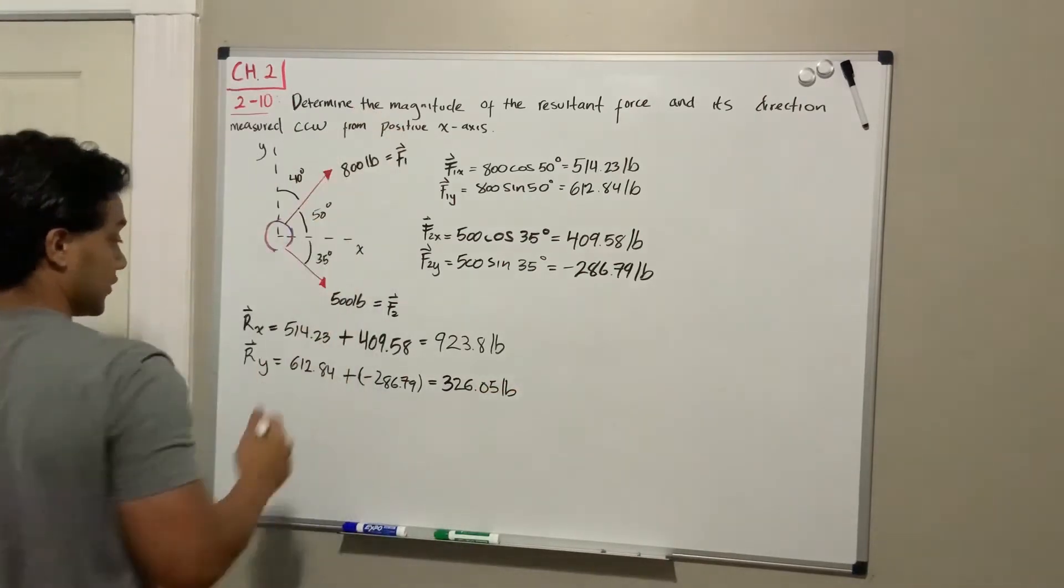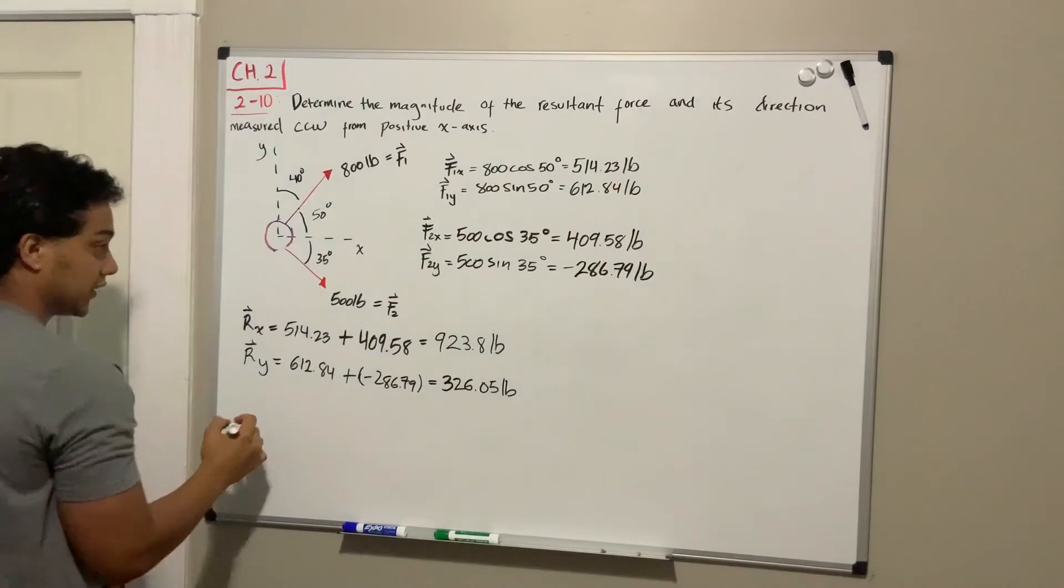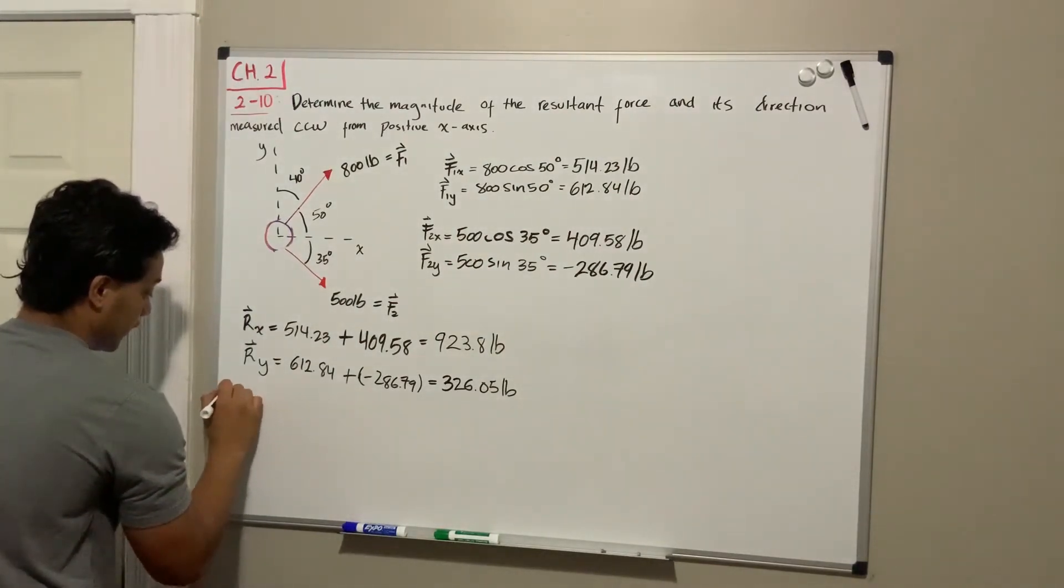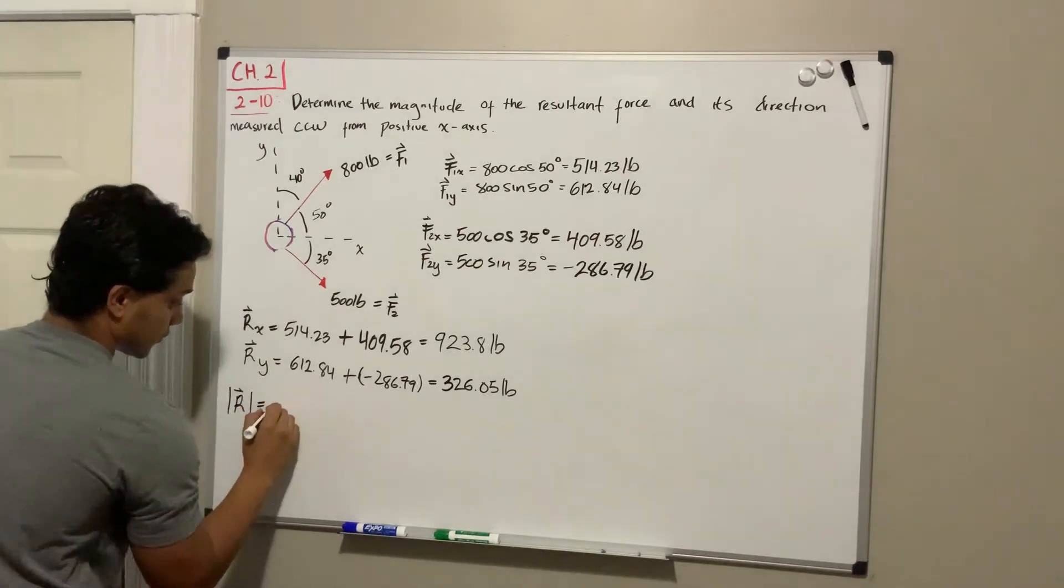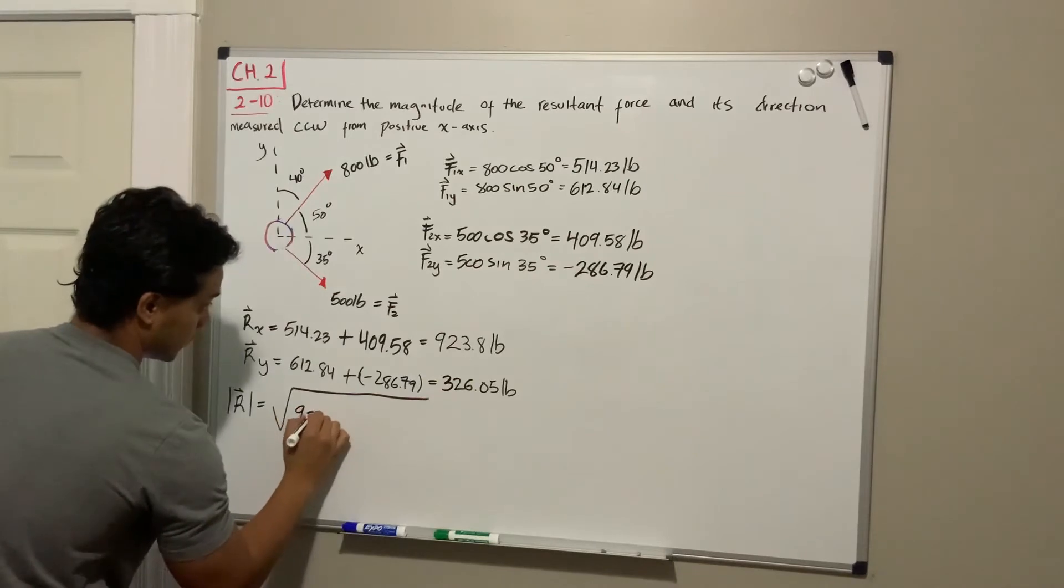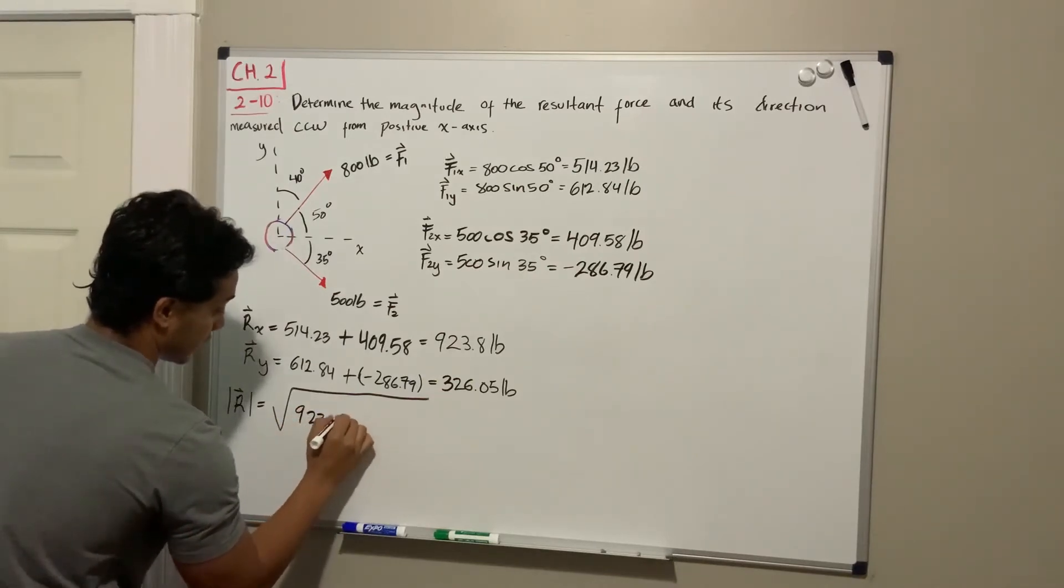They want the magnitude, so in order to find the magnitude we're gonna do Pythagorean theorem. So the magnitude of R is going to be equal to the square root of 923.8 squared plus 326.05 squared.